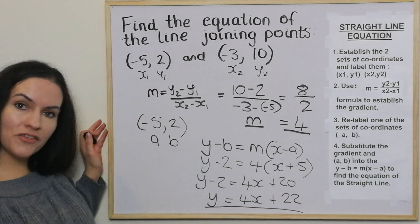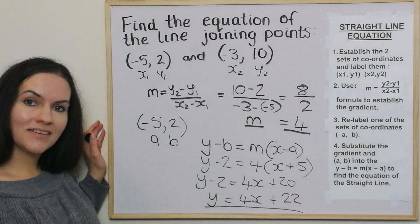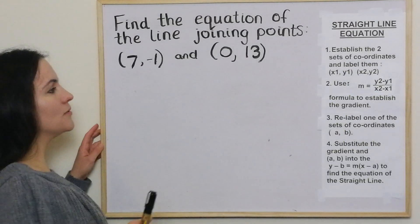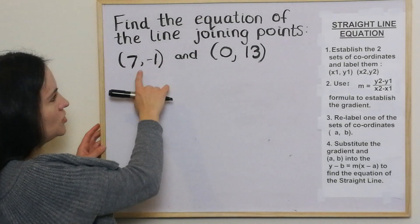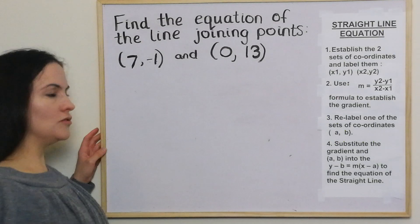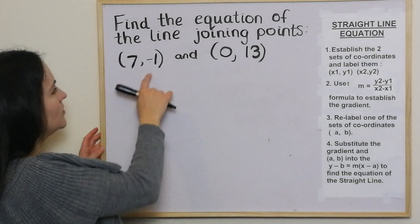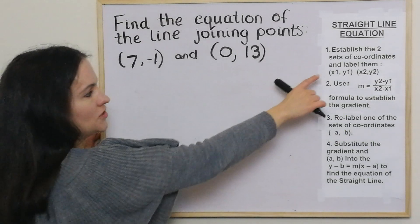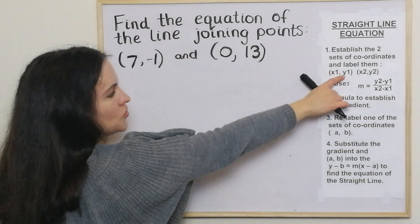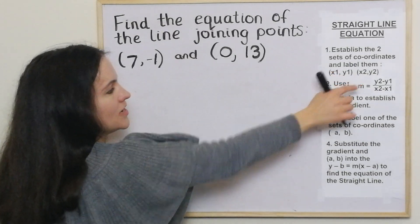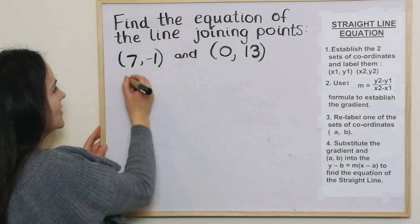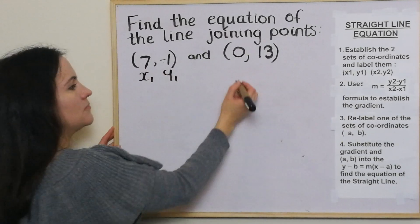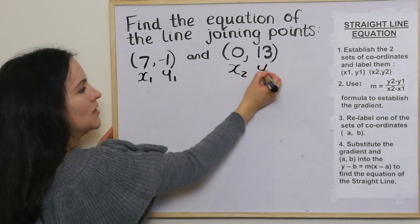I'm going to go through another example. We're finding the equation of the line joining the points, and this time we've got 7, negative 1 and 0, 13. The first thing we do is label them x1, y1 and x2, y2.